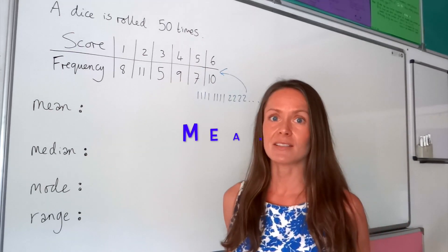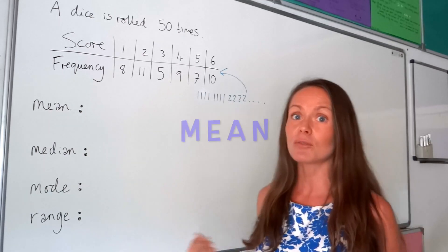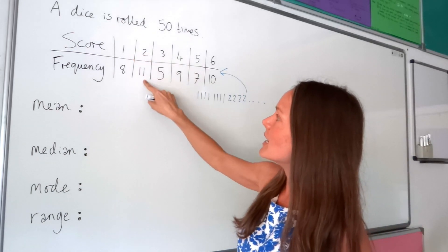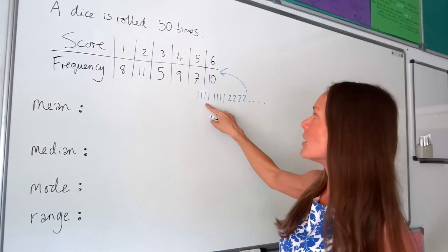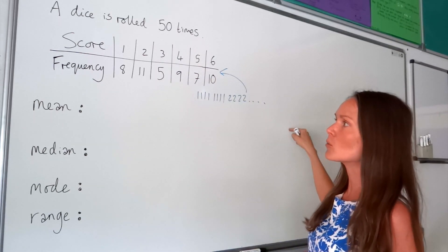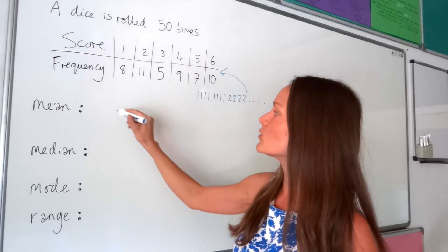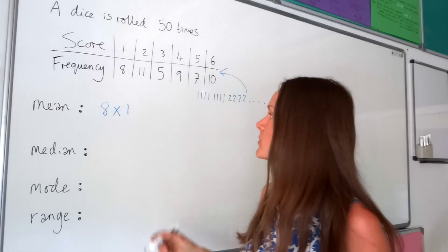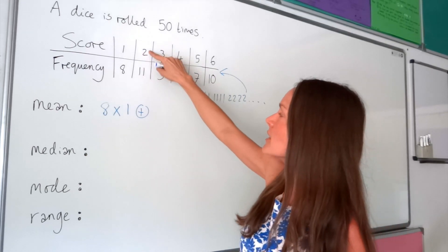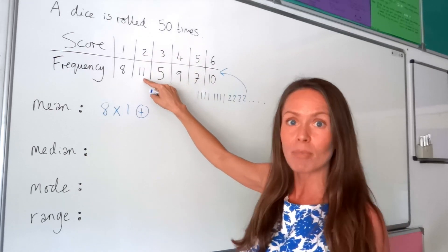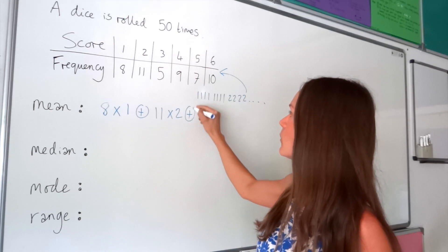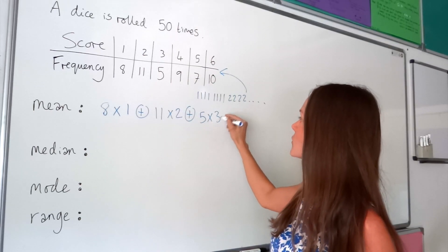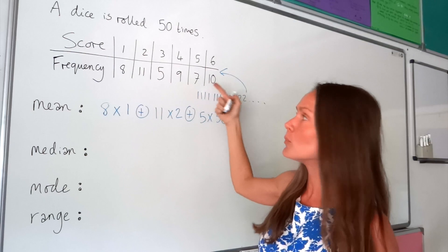Remember what mean is — you add all the values together and divide by however many numbers there are. Here we've got eight lots of one, eleven lots of two, and five lots of three. Instead of adding one eight times, you multiply the number one by eight, then add two multiplied by eleven, then three multiplied by five, and so on. You go all the way through your table doing that same multiplication.